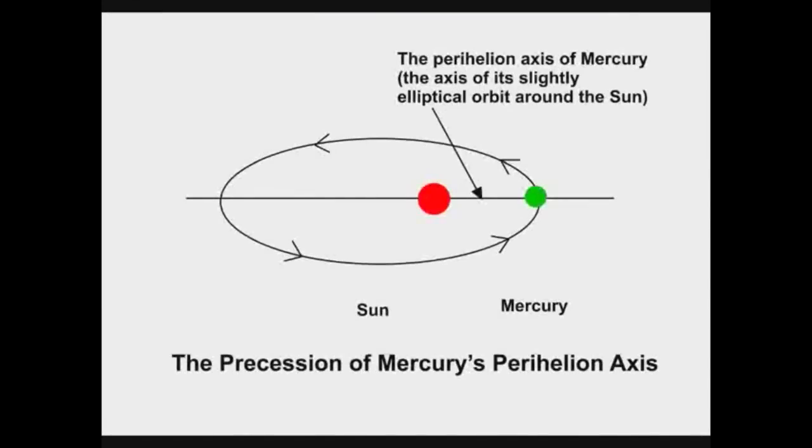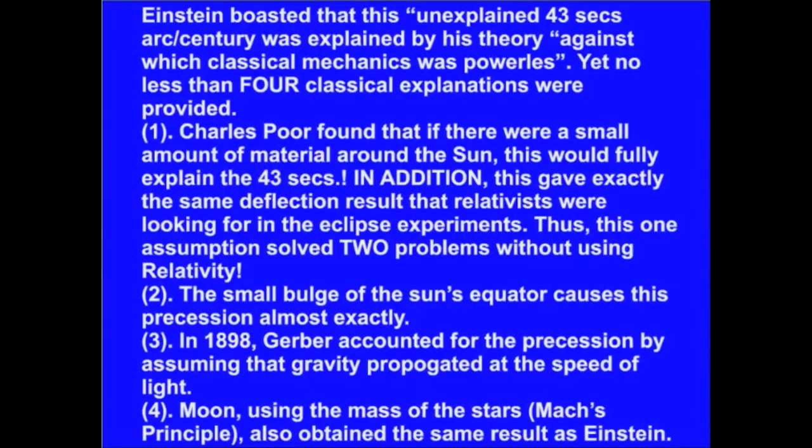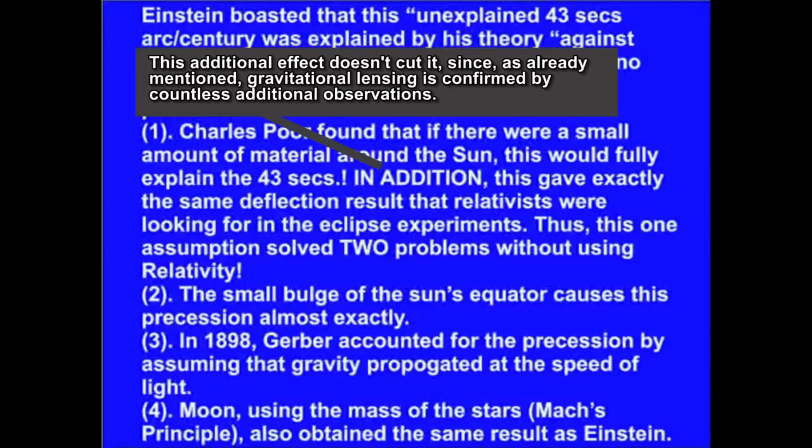The precession of Mercury's perihelion. Mercury orbits the Sun in an elliptical orbit and the long axis slowly rotates with each orbit. Einstein boasted that this unexplained 43 seconds of arc per century was explained by his theory, against which classical mechanics was powerless. Yet no less than four classical explanations were provided. Charles Poor found that if there were a small amount of material around the Sun, this would fully explain the 43 seconds. And what would that material be? What other effects would it have that we could look for and confirm its existence? As it stands, this is a completely useless ad hoc explanation.